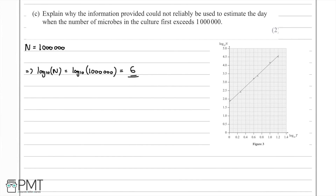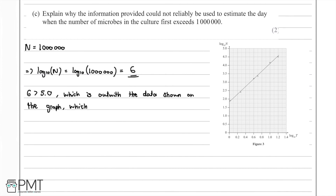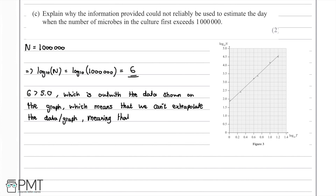Since 6 is greater than 5.0, which is outside the data shown on the graph, we can't extrapolate the data, meaning we can't assume that the model still holds.